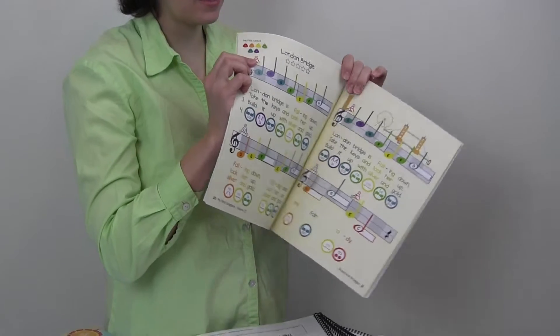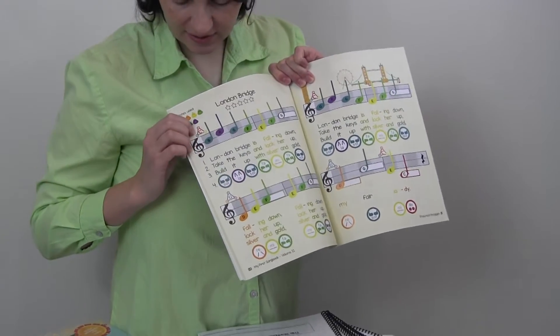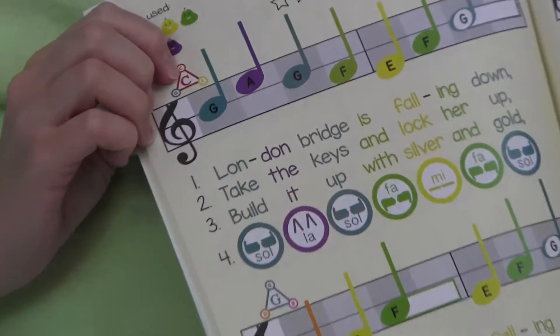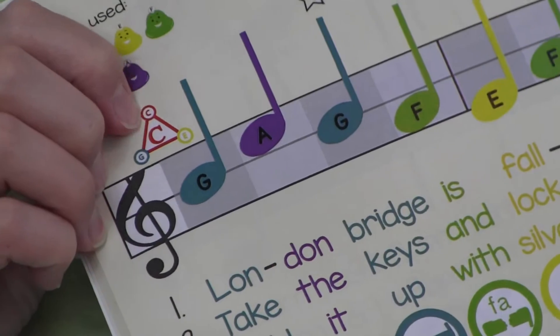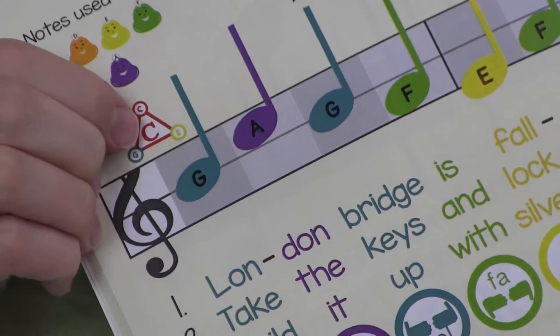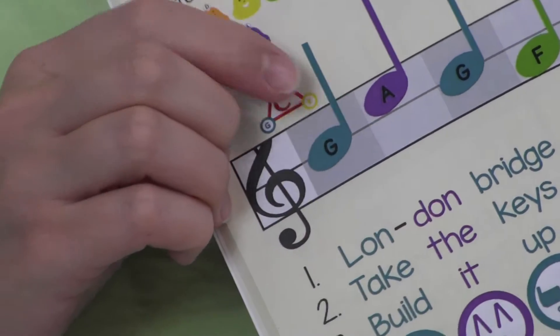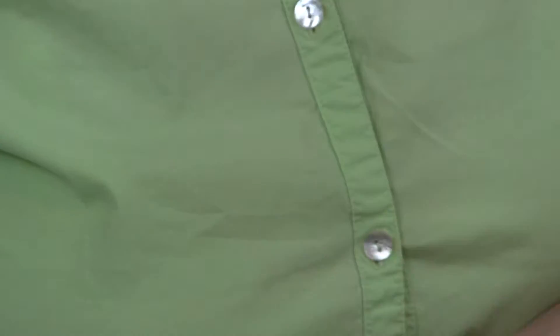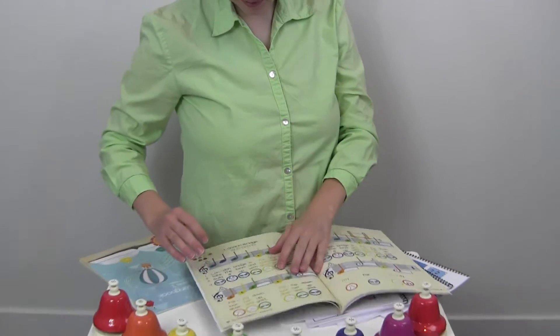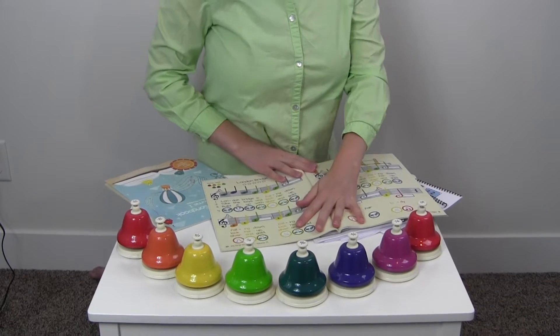And then the other new thing that he's added that I really love is these little chord triangles. So we've got a red chord here for C and then in the corners we have C, E, and G. So you know that those are the notes that make the C chord. So if we wanted to play London Bridge, we have two ways of playing it.